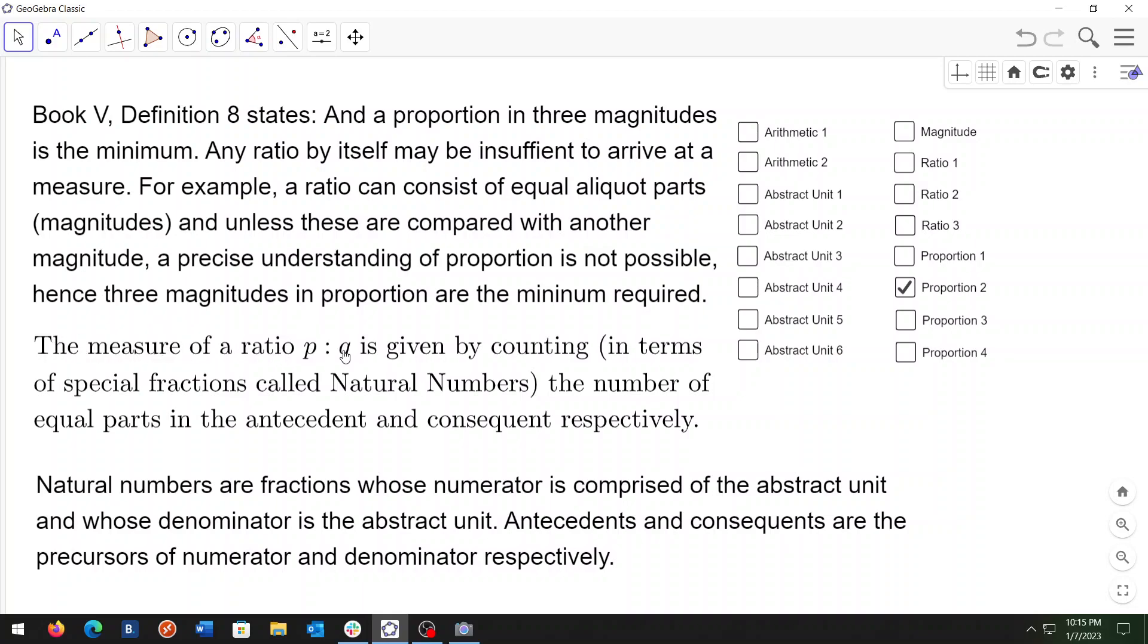The measure of a ratio P to Q is given by counting in terms of special fractions called natural numbers, the number of equal parts in the antecedent and consequent respectively. Natural numbers are fractions whose numerator is comprised of the abstract unit and whose denominator is the abstract unit. Antecedents and consequents are the precursors of numerator and denominator respectively.